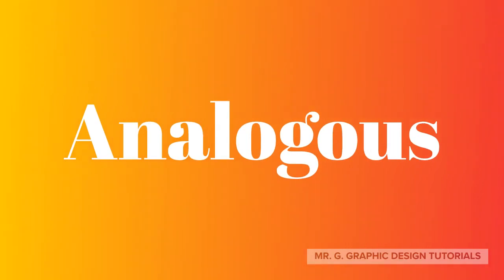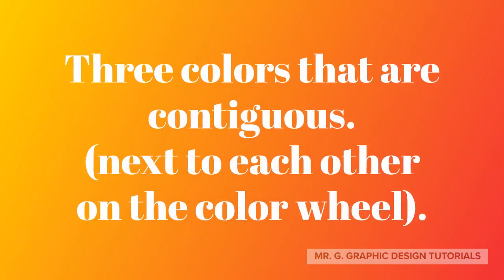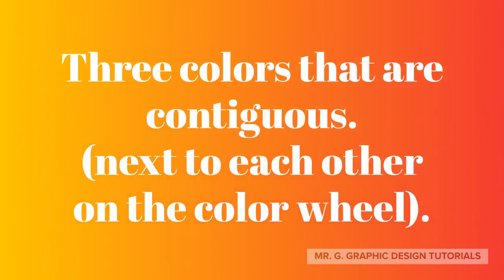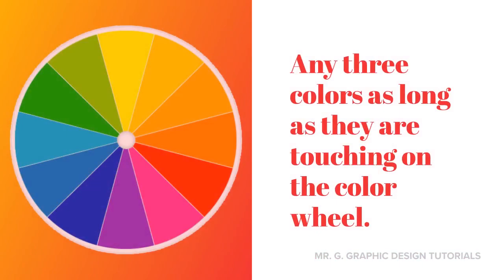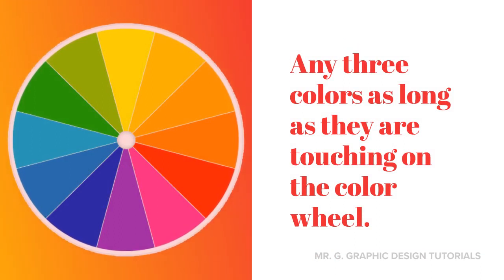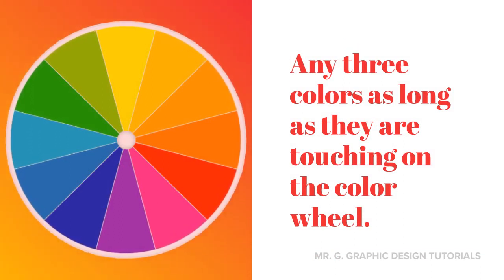Hi there little G's. Today we're talking about analogous color themes, and it's time for you to do your assignment. As you know, analogous means three colors that are contiguous or next to each other on the color wheel. Now they can be any three colors as long as they are touching each other on the color wheel.